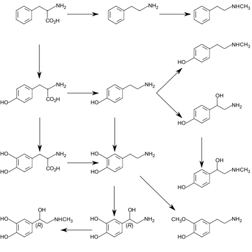The amino acid precursors phenylalanine and tyrosine are found in high concentrations in the plasma and brain. In mammals, tyrosine can be formed from dietary phenylalanine by the enzyme phenylalanine hydroxylase, found in large amounts in the liver. Insufficient amounts of phenylalanine hydroxylase result in phenylketonuria, a metabolic disorder that leads to intellectual deficits unless treated by dietary manipulation. Catecholamine synthesis is generally considered to begin with tyrosine.